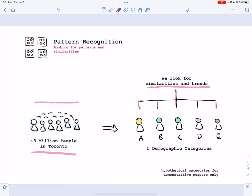And let's say, hypothetically, we can break down people in Toronto into five demographic groups because they have similarity in their patterns. So yellow A, blue B, green C, purple D, and brown E.